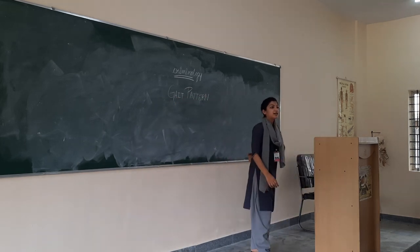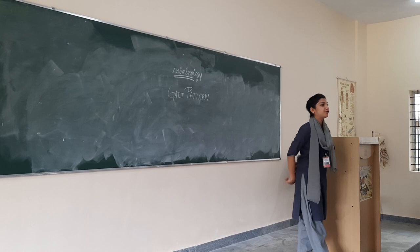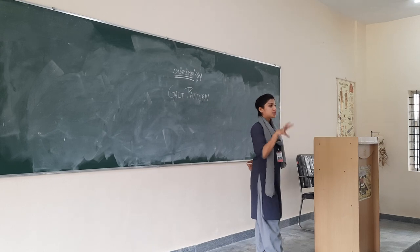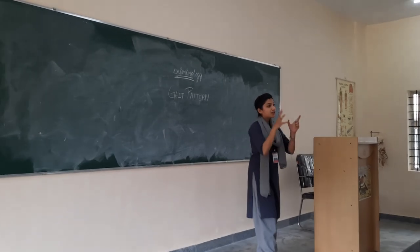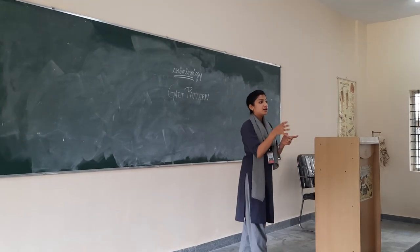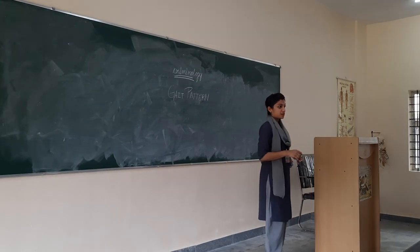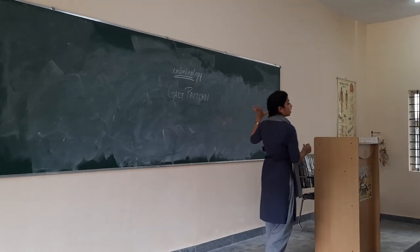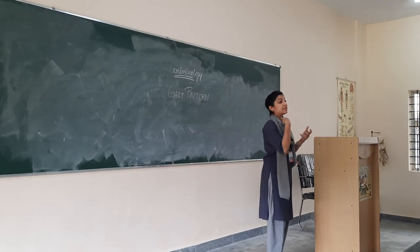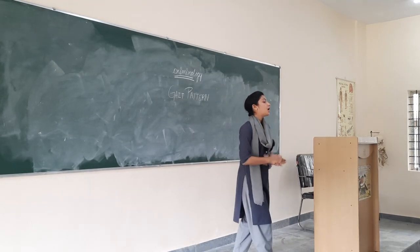There was a question about how you can find out the culprit using footprints. Footprint is just a part of the whole investigation. By using footprints alone, we cannot tell that this person is the culprit — it just increases the suspicion on that person. Using all these factors, we can determine that this person might be the culprit. The chances increase if all these patterns match with the suspect.